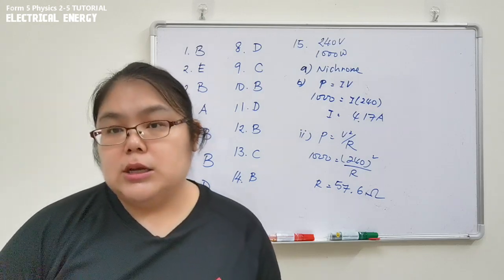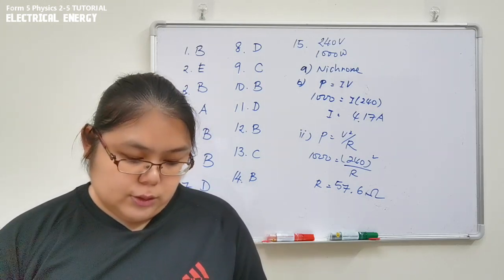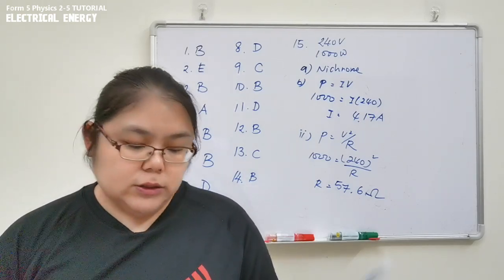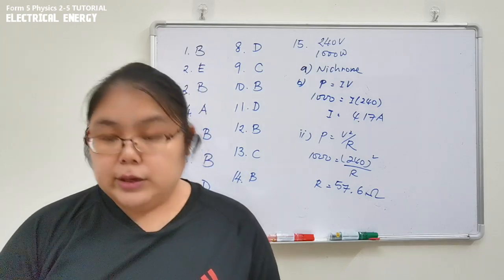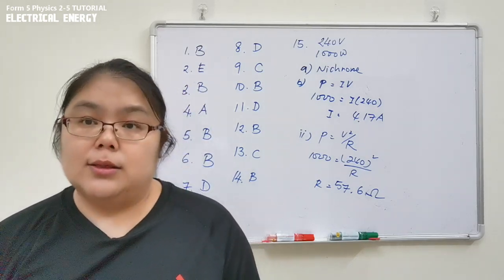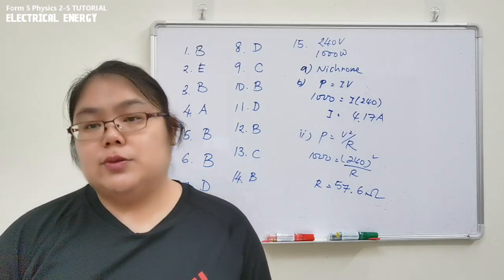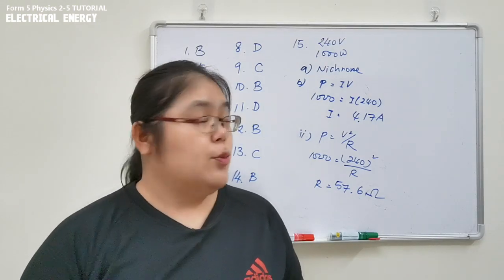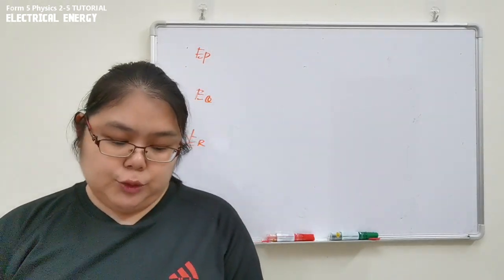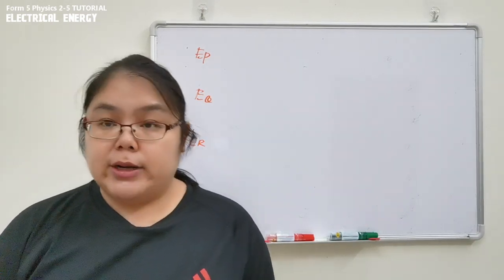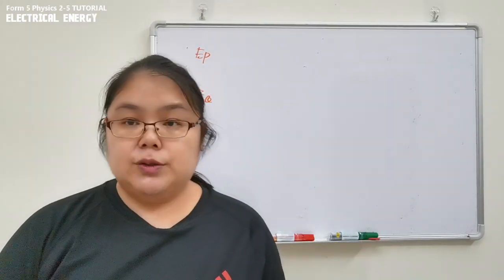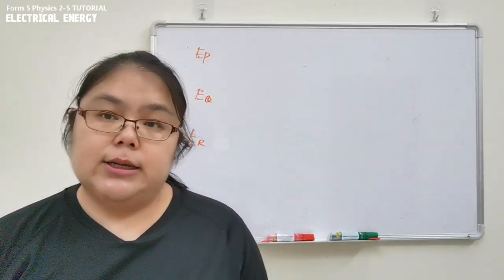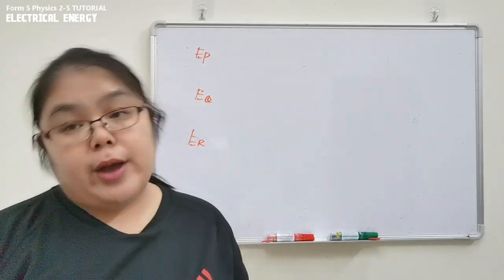The second sub-question asks us to calculate the energy supplied by each heater P, Q, and R to start boiling the water. We use the formula E = VIt. The time taken to boil is already provided — just remember to convert minutes into seconds. We calculate one by one for each heater.